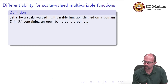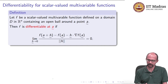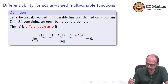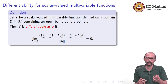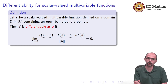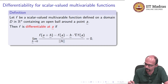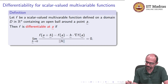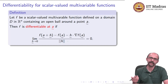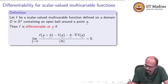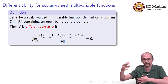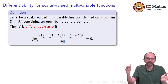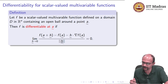If f is a scalar valued multivariable function defined on a domain D in Rⁿ containing an open ball around a point ã, then f is differentiable at ã if the following holds — pay careful attention: the limit as h̃ = (h₁, h₂, …, hₙ) tends to the zero vector of [f(ã + h̃) − f(ã) − h̃ · ∇f(ã)] divided by the norm of h̃ equals 0. We cannot divide by h̃ because h̃ is a vector; we must divide by its length, since length measures how far it is from 0. In the one-variable case we could divide by h because h itself is a number measuring distance from 0. So here we divide by the norm of h̃, and if this limit is 0, we say f is differentiable.